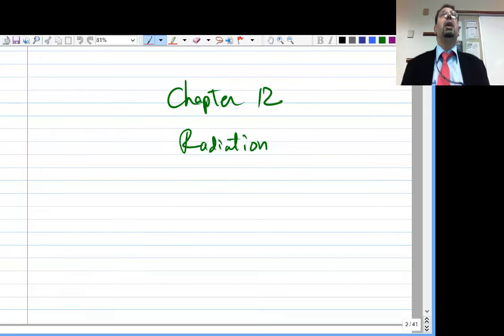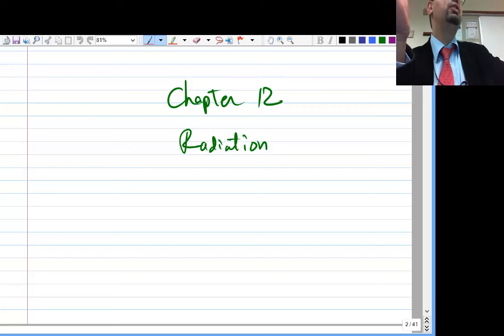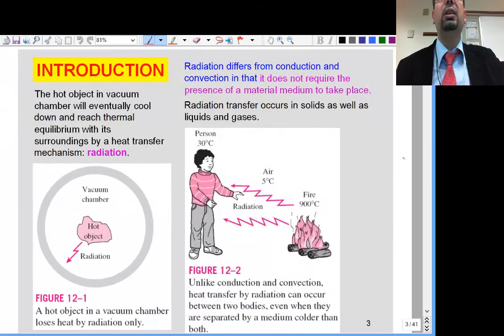So Chapter 12 is kind of an introduction, and the beef is in Chapter 13, that's where all the problems are. But Chapter 12 basically introduces the topic for you. This is about heat transfer by radiation, that's the mechanism we get all our heat from the sun, just basically by radiation.